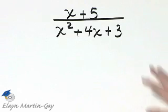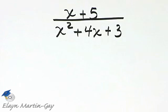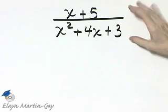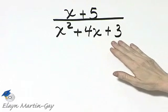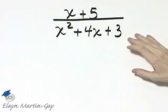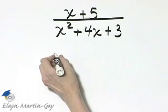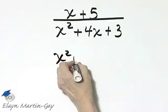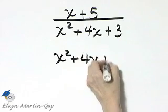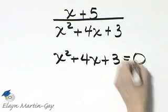I'd like to find any numbers for which this rational expression is undefined. Remember, it will be undefined when the denominator is zero. So to find the values, we need to know when is the denominator equal to zero.